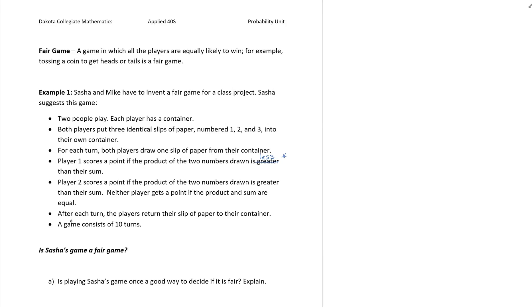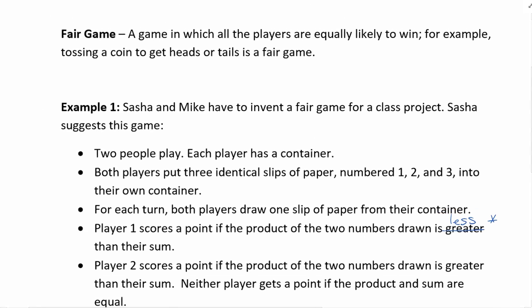One of the definitions that's going to come up over and over again is this idea of a fair game and that has to do with odds and probabilities as well. Now a fair game is a game in which all the players are equally likely to win. For example, tossing a coin to get heads or tails is a fair game. Why is that? Because you have an equal chance of getting a probability of heads and a probability of tails. Those are equal probabilities.